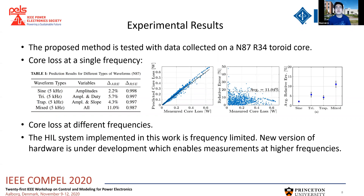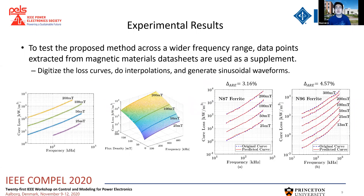Experiment results on different frequency cases can also be found in the paper. It should be mentioned that the hardware system we implemented here is frequency limited, and tests are only done in a low frequency range. A new version is currently under development, which will enable measurements at much higher frequencies. As for now, in order to test the approach across a wider frequency range, data points extracted from magnetic material data sheets are used as a supplement, where the core loss curves are digitized, interpolated, and converted to sinusoidal waveforms. The right-hand side figure shows the comparison of the predicted curves versus the original curves, where a good match is achieved in most parts of the curve.